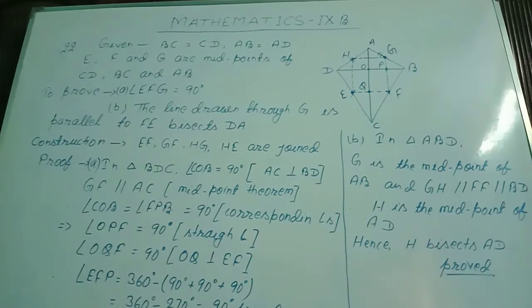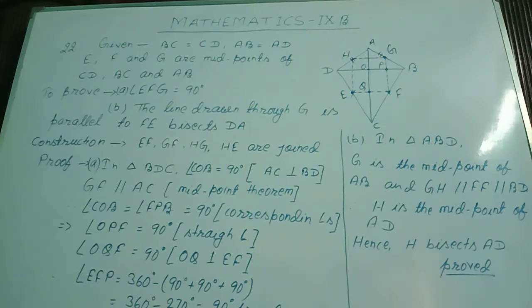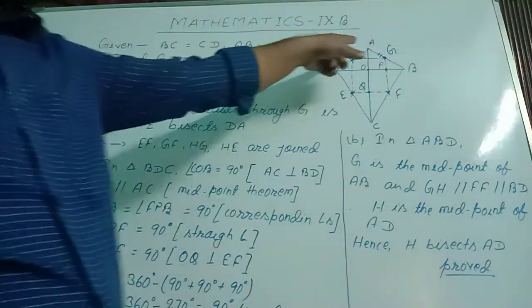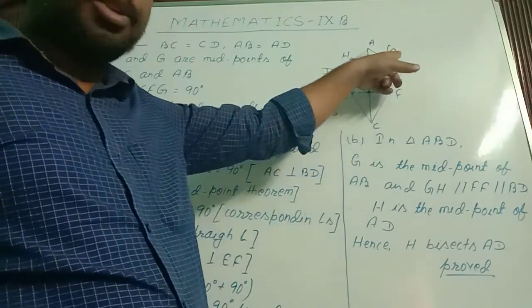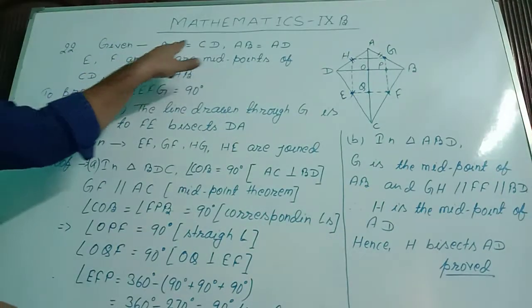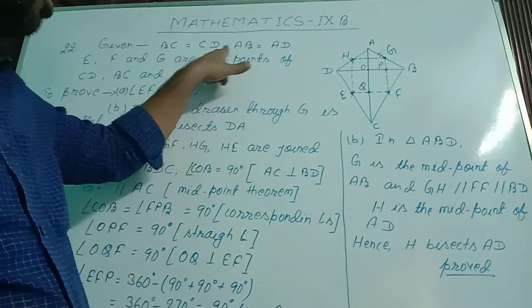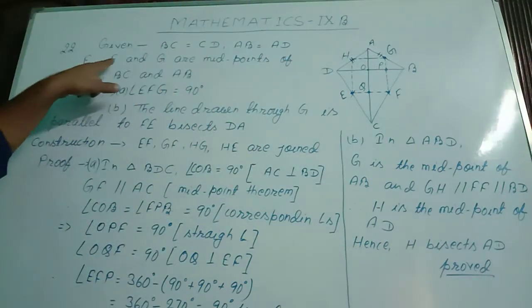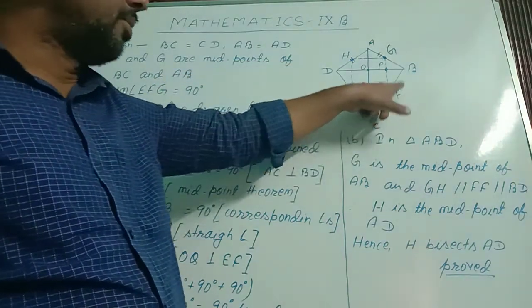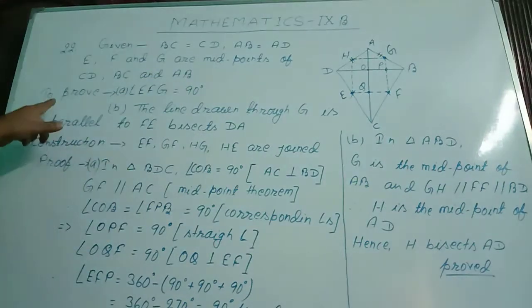In question number 22, the statement is: ABCD is a kite in which BC equal to CD and AB equal to AD. E, F and G are midpoints of CD, BC and AB respectively. Prove that angle EFG is equal to 90 degrees, and the line drawn through G parallel to FE bisects DA. Given information: BC equal to CD and AB equal to AD — these two pairs of sides are equal. E is the midpoint of CD, F is the midpoint of BC, and G is the midpoint of AB.